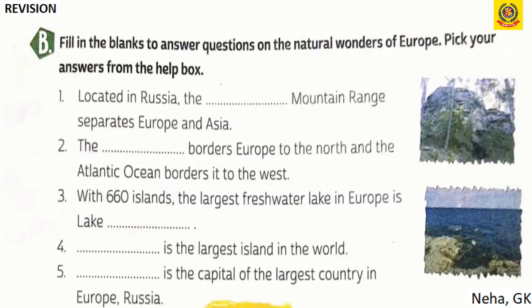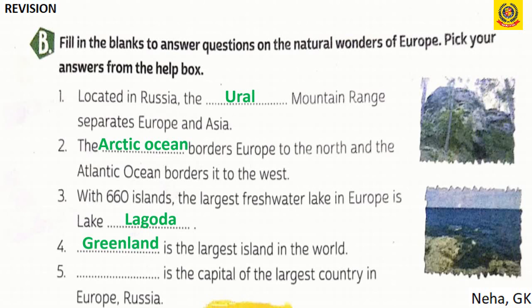Part B — Natural Wonders of Europe: The Ural mountain range, located in Russia, separates Europe and Asia. The Arctic Ocean borders Europe to the north and the Atlantic Ocean to the west. The largest freshwater lake in Europe is Lake Ladoga, with 660 islands. The largest island in the world is Greenland. The capital of the largest country in Europe, Russia, is Moscow.